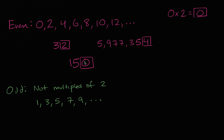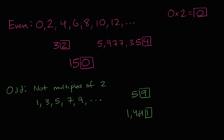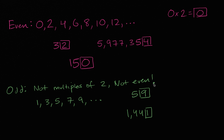Just like we can look at the one's place to spot an even number, you can also look at the one's place to spot an odd number. The number 59 — well, I have a nine in the one's place, and nine is odd, so this is going to be an odd number. The number 1,441 has a one in the one's place — that is an odd number, so this whole thing is going to be odd. It'd be hard to split 1,441 donuts evenly between two people without breaking one. One person would have to get one extra donut. The easiest way to think about odd: it's not a multiple of two, it is not even.